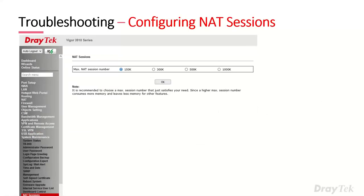Regarding NAT sessions — on a site with many hundreds of devices, they could reach the NAT session limit. By default it's 150K, but you can set it to 300K, 500K, or even 1 million. It's recommended to choose the lowest number needed for your requirements, because higher session counts reserve more memory, leaving less available for other features. You can monitor memory usage on the dashboard to see the effect.